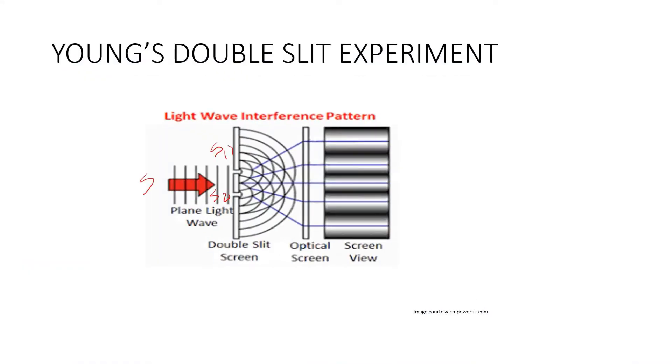Young's double slit experiment helped in understanding the wave theory of light. Consider a monochromatic light source S kept at a considerable distance from two slits S1 and S2. Monochromatic light sources produce light waves of same frequency, same wavelength, and same amplitude.